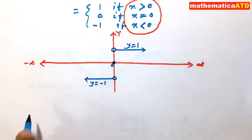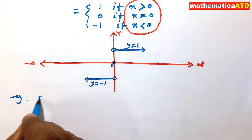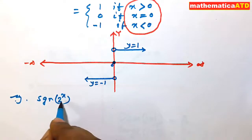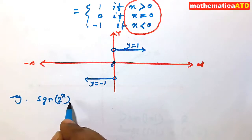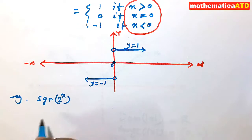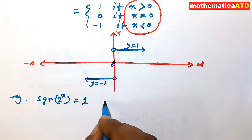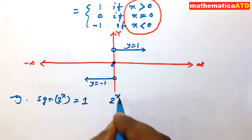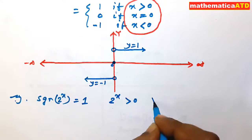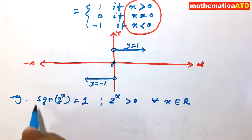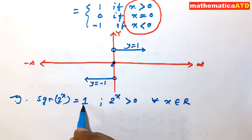Now a question: what is sgn(2^x)? Is it -1, 0, or 1? This is obviously 1. In the last video we saw that 2^x, i.e., a^x, is greater than zero for all x ∈ ℝ. Since 2^x is always positive, sgn of any positive quantity equals 1. So sgn(2^x) = 1.